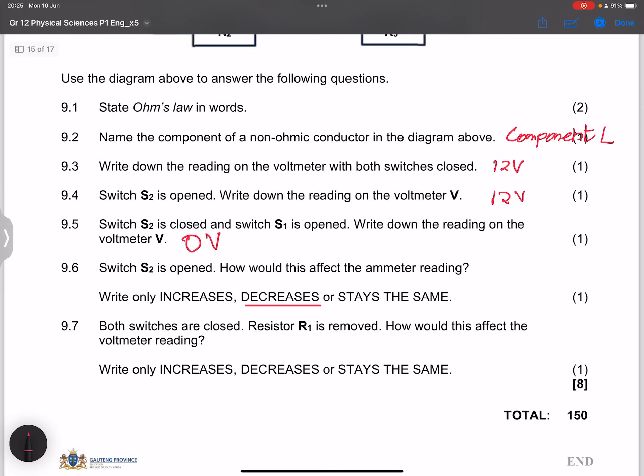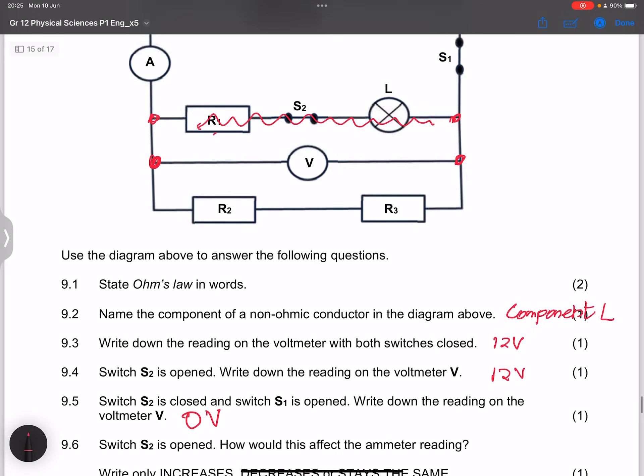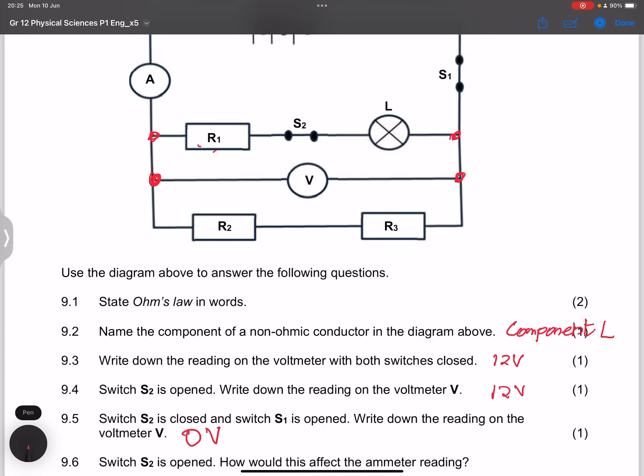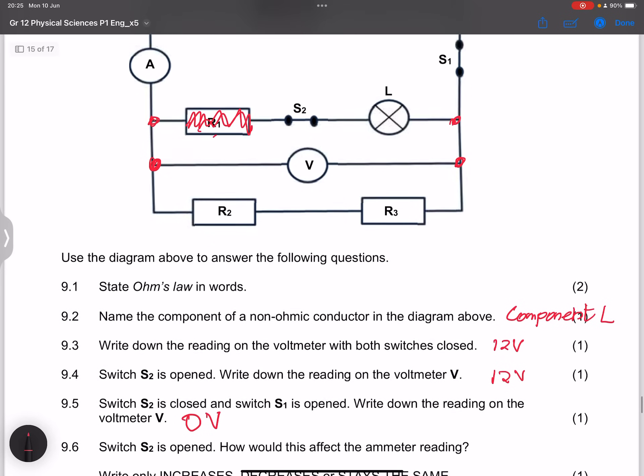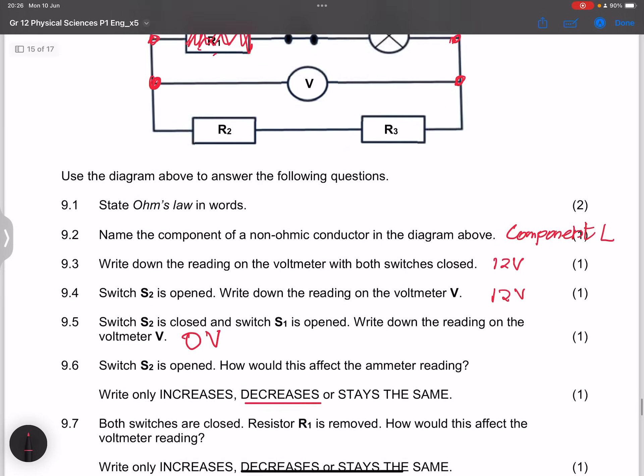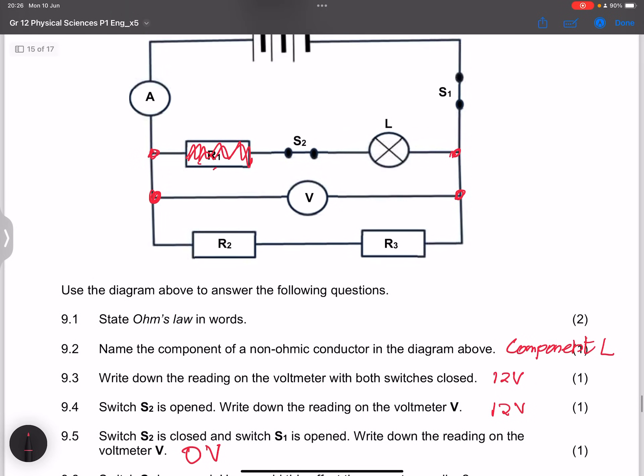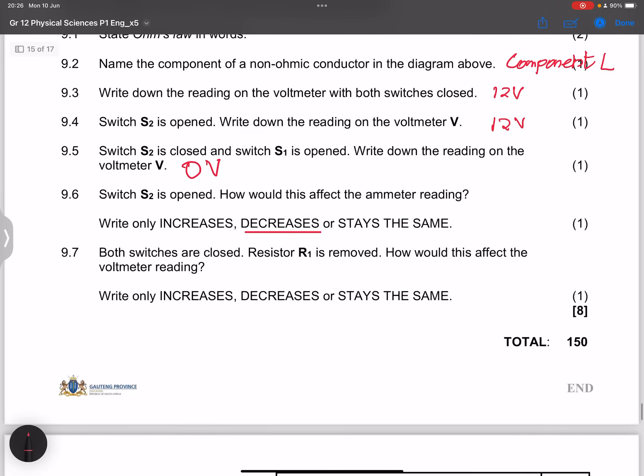Finally, they say both switches are closed, R1 is removed. How would this affect the voltmeter reading? So we close both switches, we remove resistor R1. In this case, by removing that resistor, we are actually going to have the external resistance of the circuit is actually going to decrease.